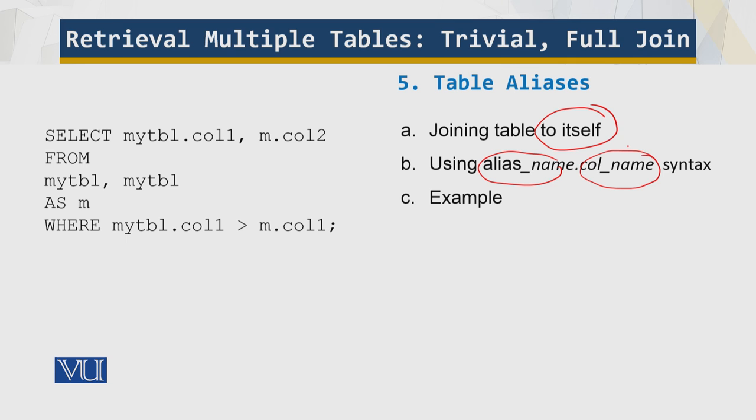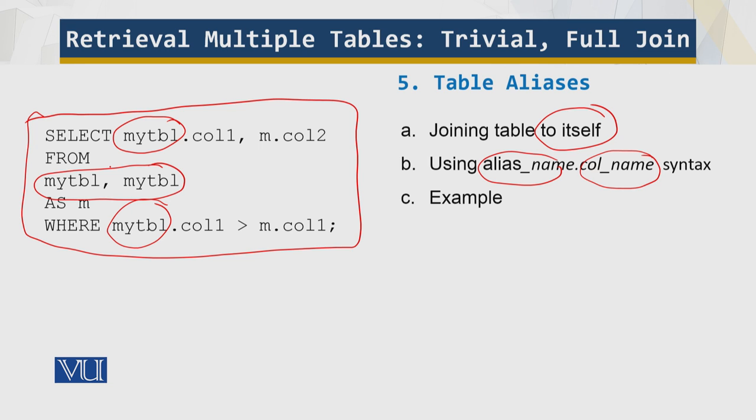The following query joins a table to itself, but assigns an alias to one instance of the table to allow column references to be specified unambiguously. So joining the table with itself. These are the aliases from, so this is how it's going to work. And that's all I have to cover in this module.